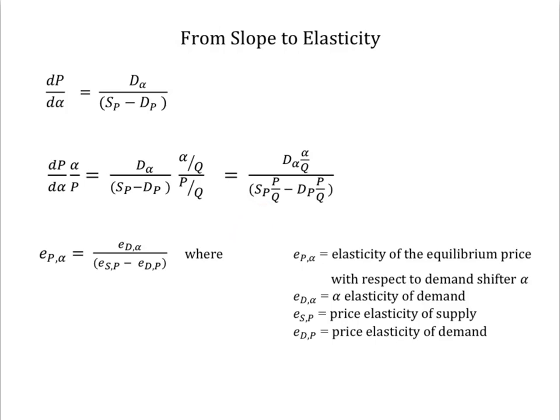But these are just elasticities. The numerator is the elasticity of quantity demanded with respect to alpha, and the denominator is the difference between the price elasticity of supply and the own price elasticity of demand. The equation says that the responsiveness of the equilibrium price to a change in alpha, a change in the demand shifter, equals the ratio of the responsiveness of quantity demanded to the change in that shifter, holding price constant, over the difference between the responsiveness of supply and the responsiveness of demand.